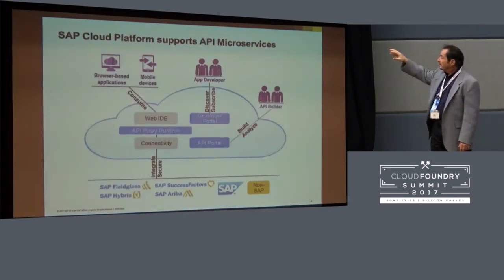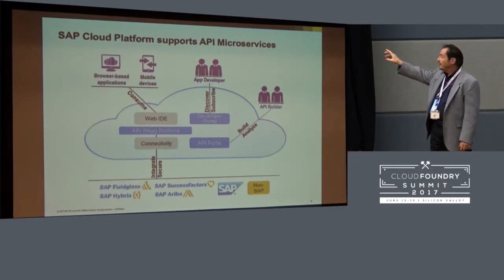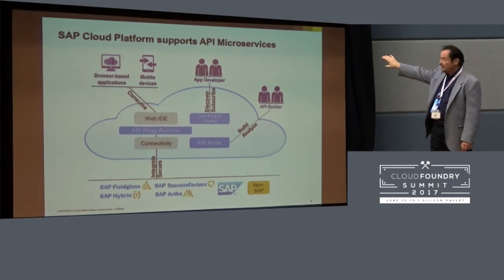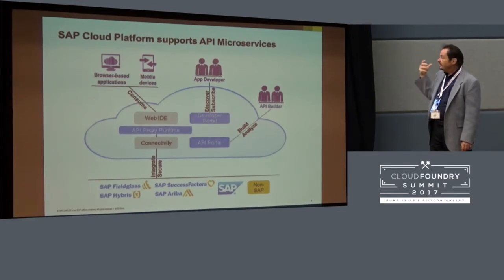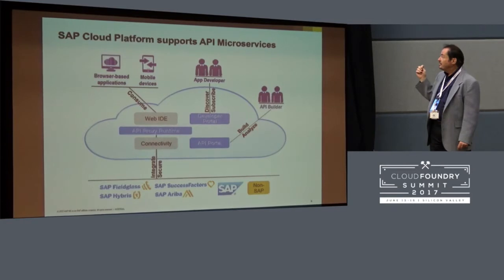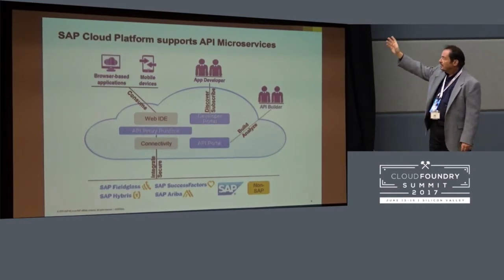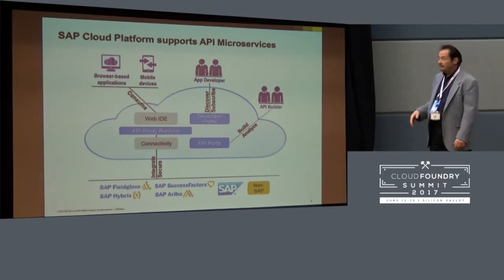And in particular, microservices. By using API proxies, it's possible to look at all of the software assets as potential sources of microservices, which can then be used in the cloud. We can also leverage support for browsers and mobile devices.